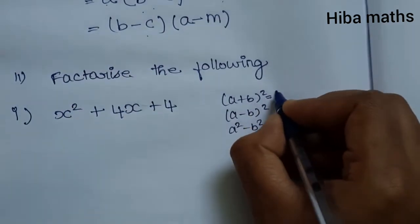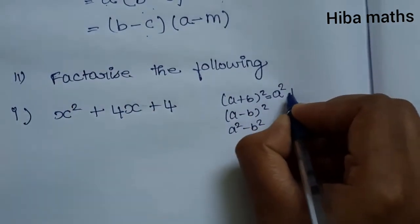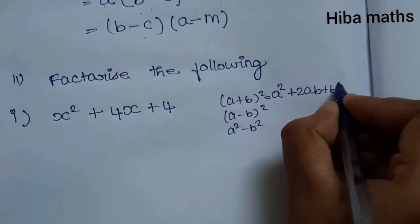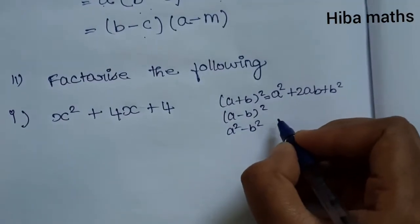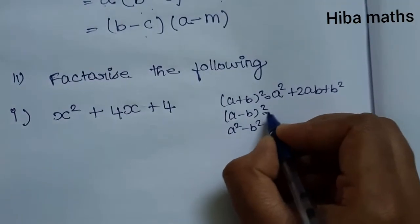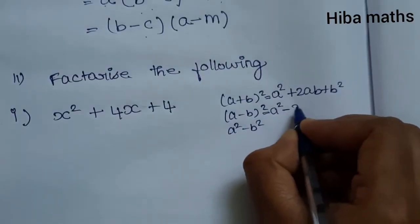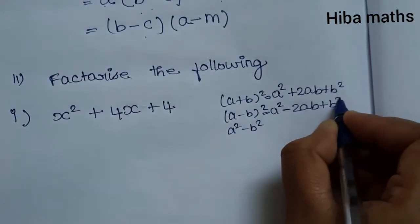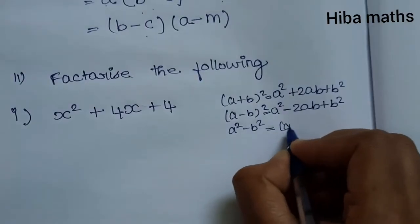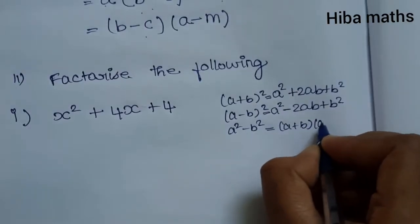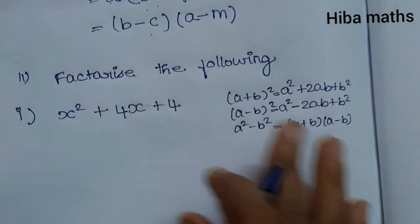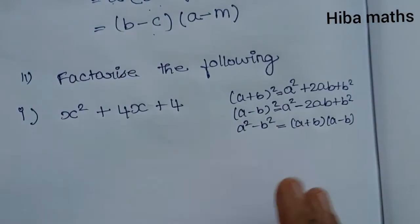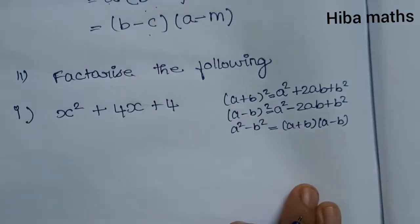The (a+b) whole square formula is a² + 2ab + b². The (a-b)² formula gives a² - 2ab + b². And a² minus b² equals (a+b)(a-b). These formulas will help us solve more easily.